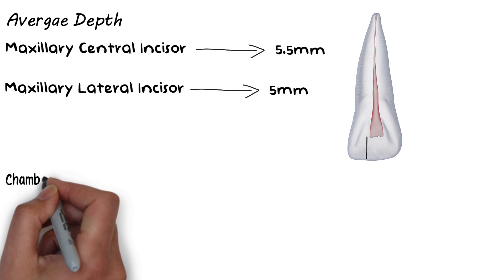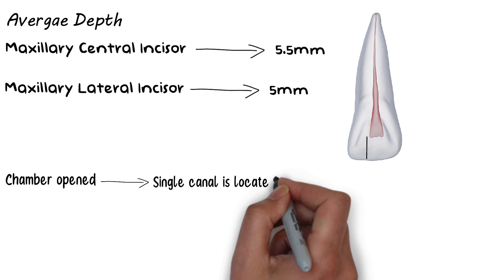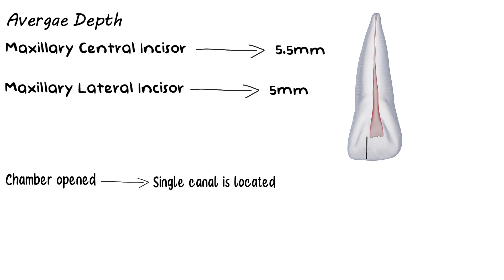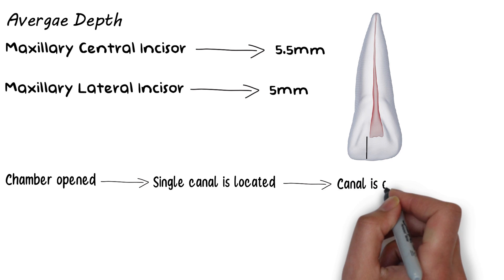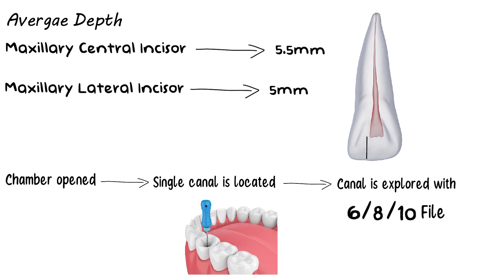After reaching the chamber, the single canal is then located. Once the canal is located, a small file or pathfinding instrument such as a 0.06, 0.08, or 0.10 stainless steel file is used to explore the canal and determine the canal patency close to the apical foramen. The later steps of root canal treatment will be covered in more detail in later videos.